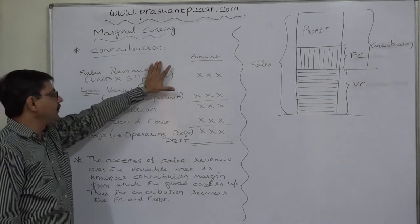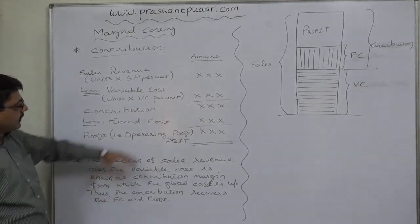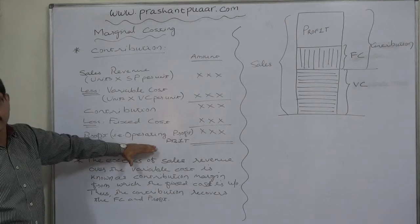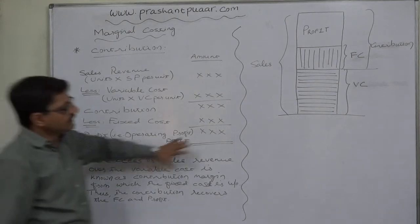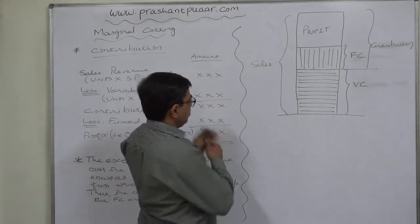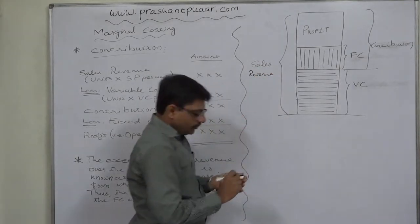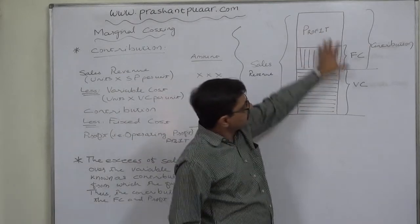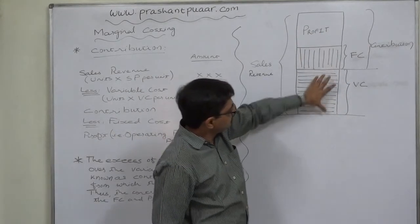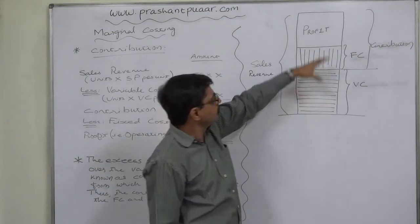The second angle is that contribution margin recovers fixed cost as well as profit. This diagram shows the structure of sales revenue — sales revenue is ultimately made up of variable cost and fixed cost, which together are known as total cost. Total cost plus profit equals our sales revenue.